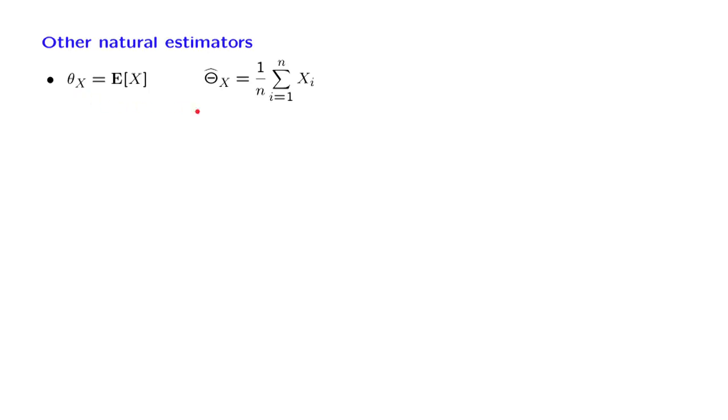Now we can apply this idea more generally. Suppose we want to estimate the expected value of a function of a random variable X. Now g of X is itself a random variable, so if we have samples of g of X, we can use the same procedure. How do we do that? We generate independent samples of X, and these give us independent samples of g of X.